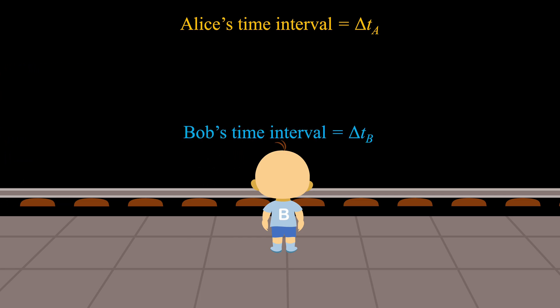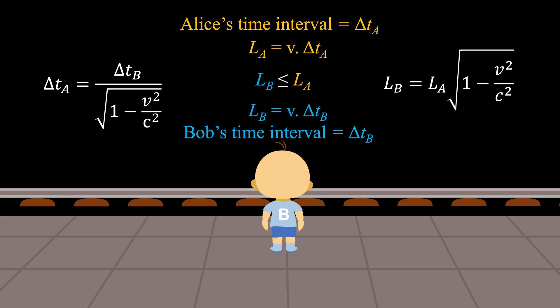The principle of relativity ensures that both measure the same relative velocity V. Thus, the train's length as recorded by Alice and Bob are simply products of respective time intervals and relative velocity. These events occur at the same position in Bob's frame, so his time is the proper time. Therefore, using the appropriate time dilation relation, we find that Bob measures a shorter ruler length than Alice.